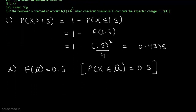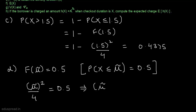We know the CDF is F(x) = x² / 4. So F(μ̃) = μ̃² / 4 = 0.5, which implies μ̃² = 2, so μ̃ = √2. Note that we do not take the negative root because X takes values between 0 and 2. We know √2 ≈ 1.4142, so the probability that X ≤ 1.4142 equals 0.5, and this is the median checkout duration.